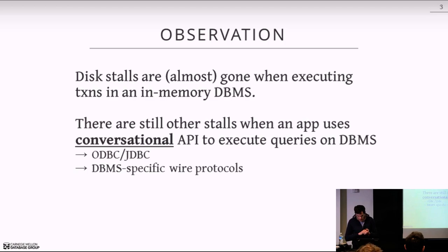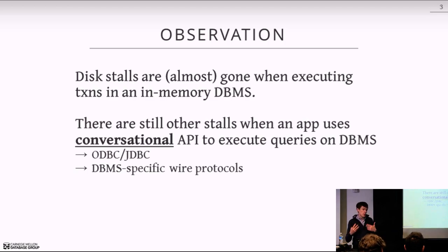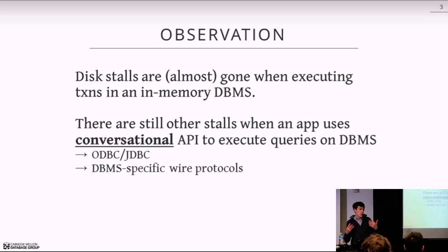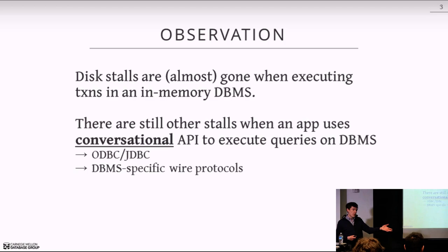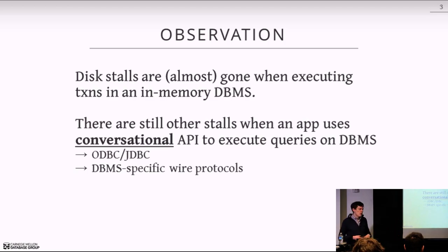When we switch to an in-memory database, one key advantage is that stalls caused by a transaction trying to access data not in main memory go away, because the primary location of the database is in main memory. So disk stalls are pretty much gone entirely. We'll still need the disk to log things out in the write-ahead log so changes in memory are durable, but we won't have long pauses fetching blocks into the buffer pool.